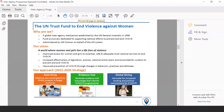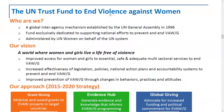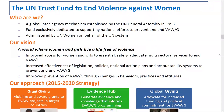The UN Trust Fund to End Violence Against Women has actually been around for 20 years, since 1996. We're the only multilateral global interagency mechanism on violence against women, exclusively dedicated to supporting efforts to prevent and end violence against women. We are managed by UN Women and housed in UN Women in New York, but we do represent the entire UN system. On our board, we have UNICEF, UNFPA, NGOs, and researchers. So although we're managed by UN Women, we do represent a much broader stakeholder group.